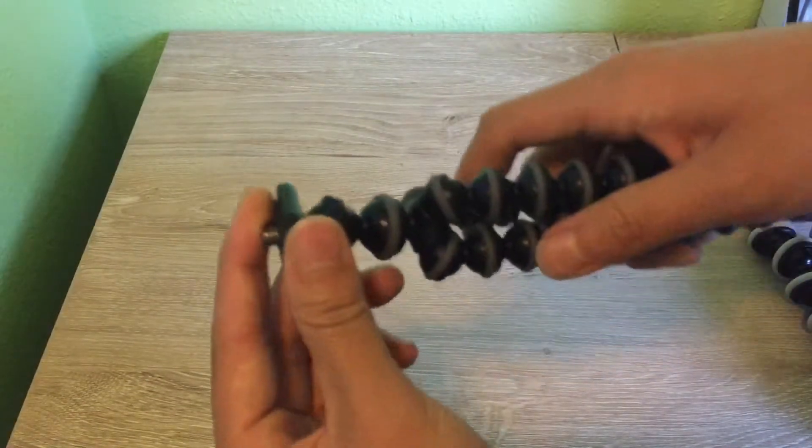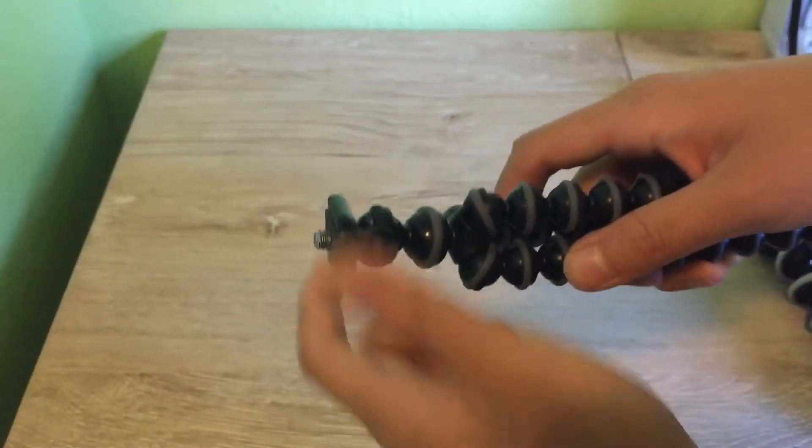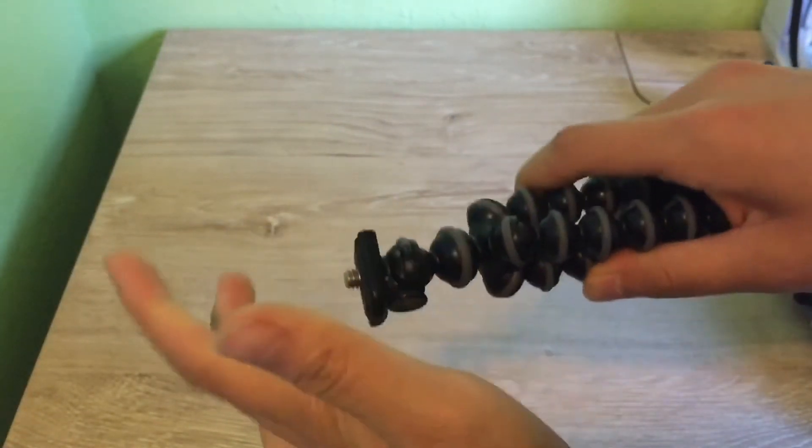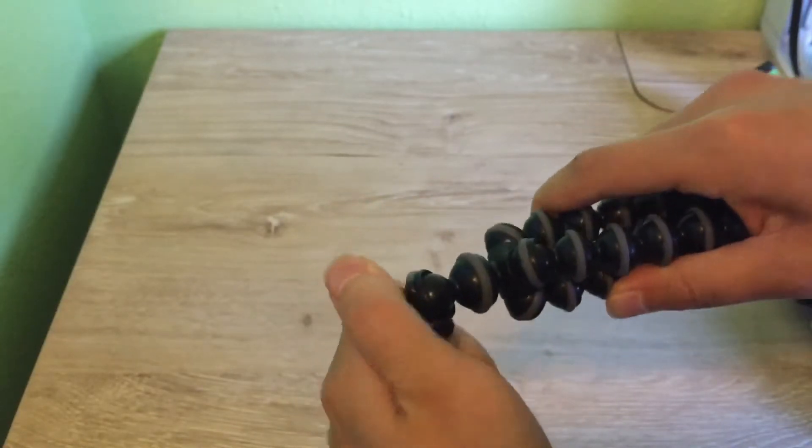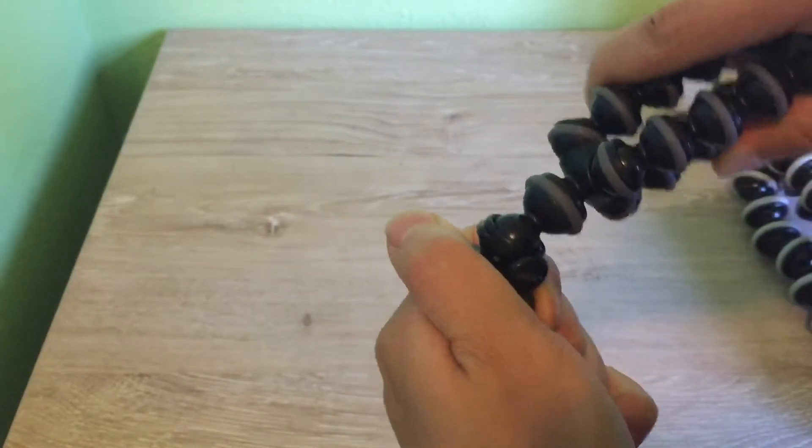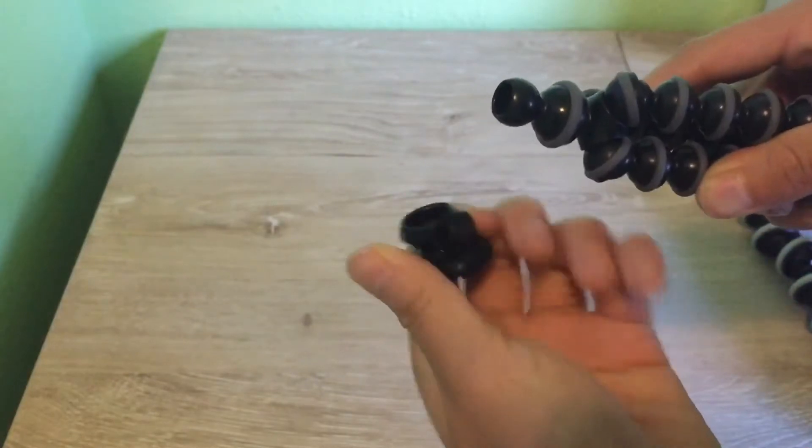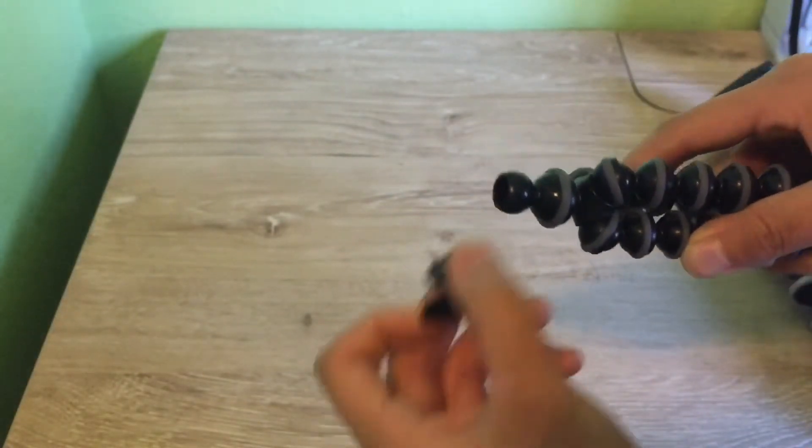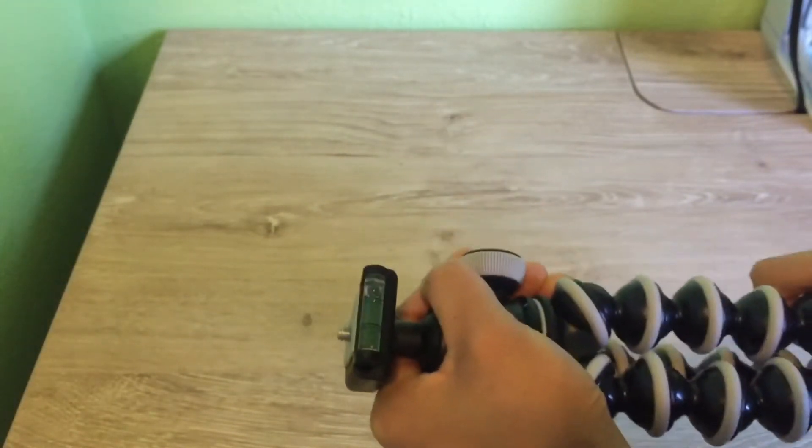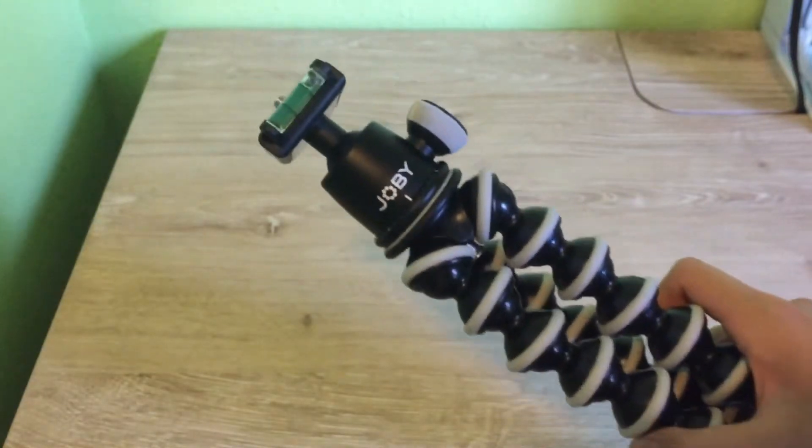The problem about this one is that every time I put my phone on here, not every time but sometimes, it would just, you see this right here, how it moves right here, it would just snap sometimes and then my phone will fall over. So that's why I got a much bigger one, and I know that it won't fall off. And yeah, so that's why I upgraded to this one.